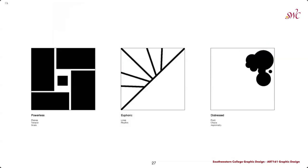Once you have your sketches, you're going to choose one sketch for each word and use the template in the module to convert that over into vector artwork. That concludes the lecture for Part 2 of the Visual Principles.